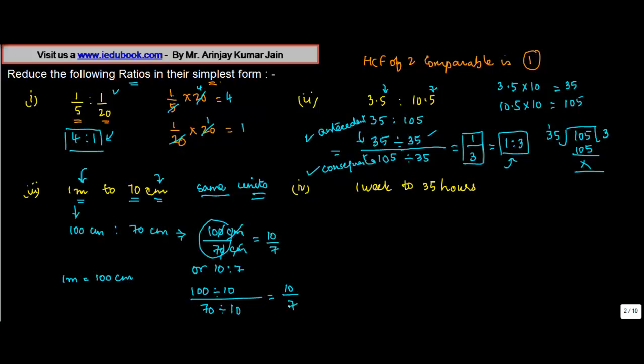Let us see one more. Here, basically, this will kind of complete various types of issues that you might be getting. One week to 35 hours. Now we know, here we have week, here we have hours. We know one week is equal to seven days, and one day is equal to 24 hours.